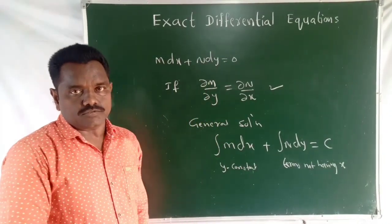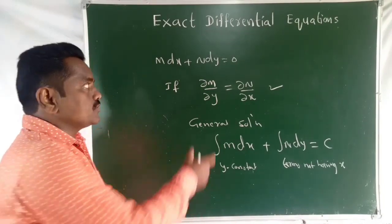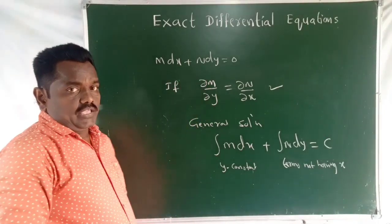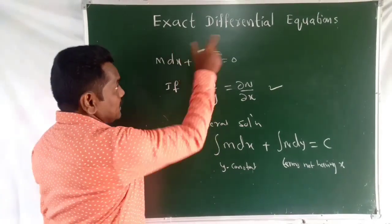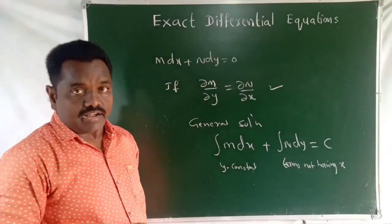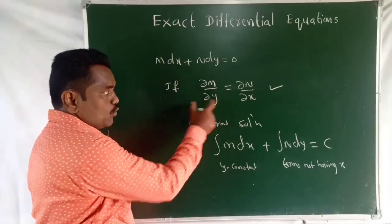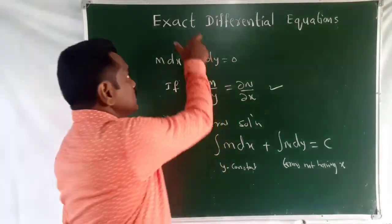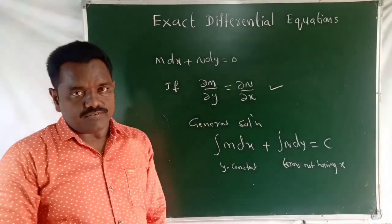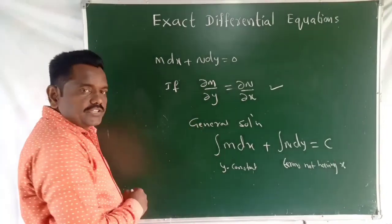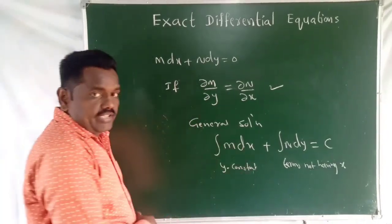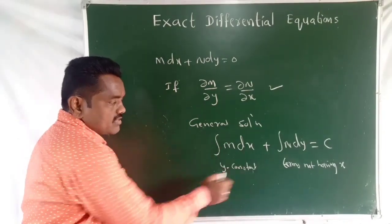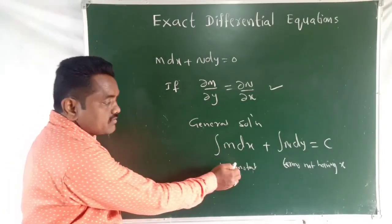The general solution is: integration of M dx plus integration of N dy equal to C. One condition is that in the integration of M dx, Y is treated as constant, and in the integration of N dy, we take only terms not having X.